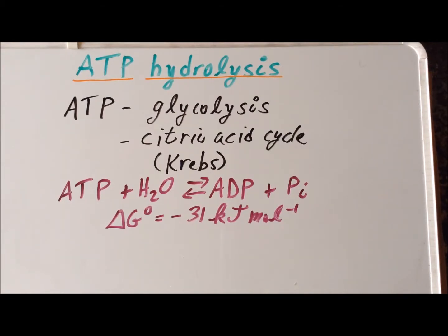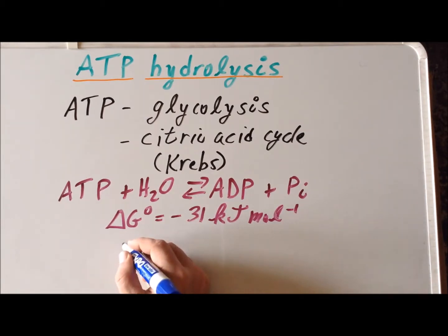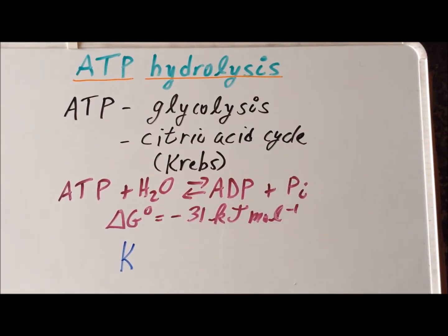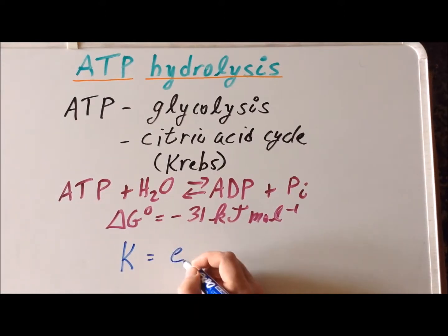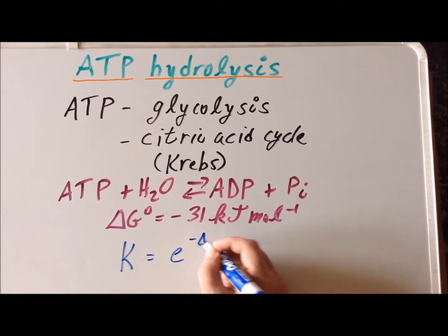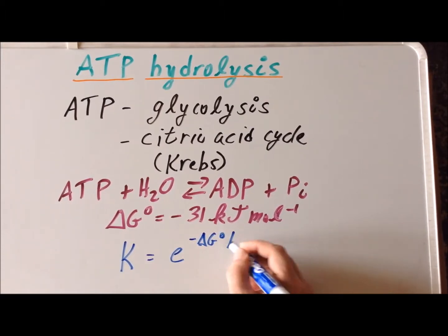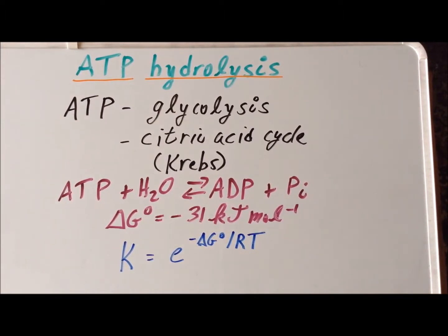Another incredibly important relationship from thermodynamics is that the equilibrium constant for a reaction is related to the standard Gibbs free energy. K, the equilibrium constant, is equal to e to the minus delta G naught divided by RT, where R is the gas constant and T is the thermodynamic temperature in Kelvin. This links the standard Gibbs free energy and the equilibrium constant.